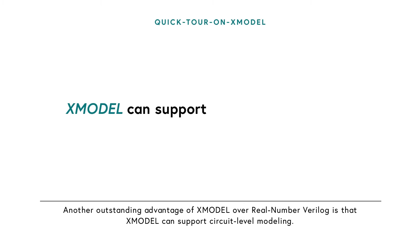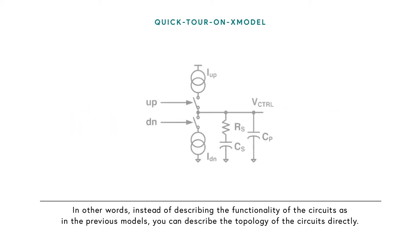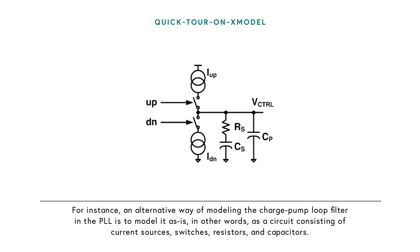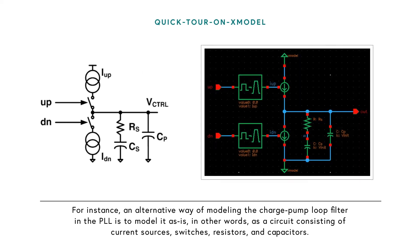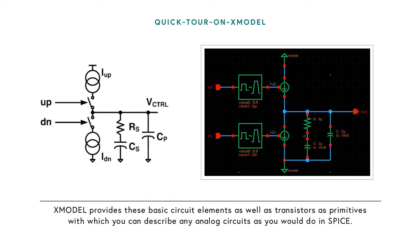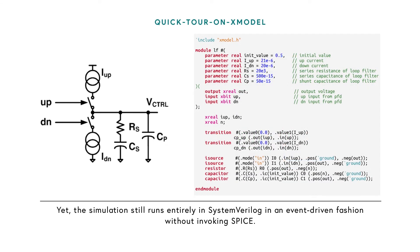Another outstanding advantage of X-Model over Real Number Verilog is that X-Model can support circuit-level modeling. Instead of describing the functionality of the circuits, you can describe the topology of the circuits directly. For instance, an alternative way of modeling the charge pump loop filter is as a circuit consisting of current sources, switches, resistors, and capacitors. X-Model provides these basic circuit elements as well as transistors as primitives, with which you can describe any analog circuits as you would in SPICE — yet the simulation still runs entirely in SystemVerilog in an event-driven fashion.